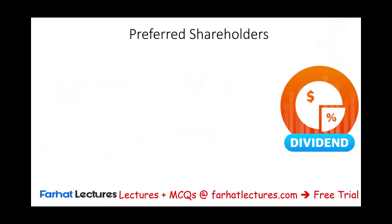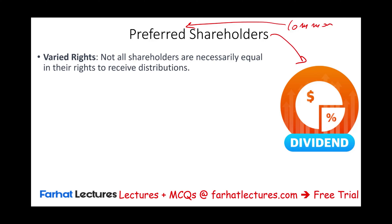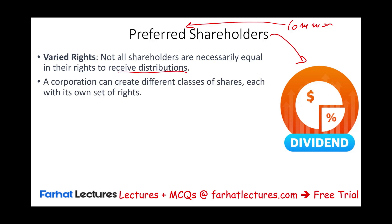We also need to understand preferred shareholders. Preferred shareholders are another class of shareholders — when we don't specify, we assume shareholders are common. If they are preferred, they have certain preferences. Preferred shares can have different classes within common stock as well, such as Class A with voting rights and Classes B and C without. The key point is that not all shareholders are necessarily equal in their right to receive distributions.